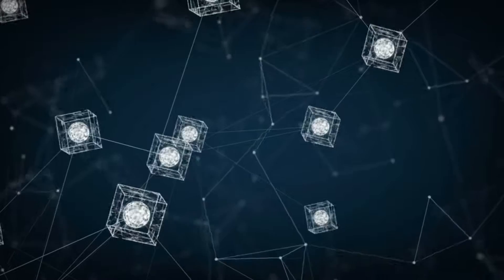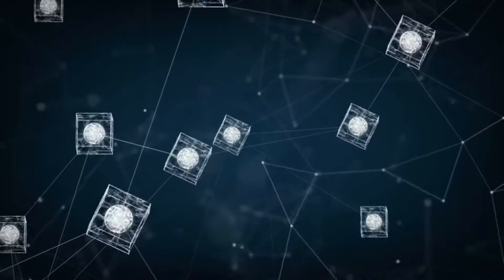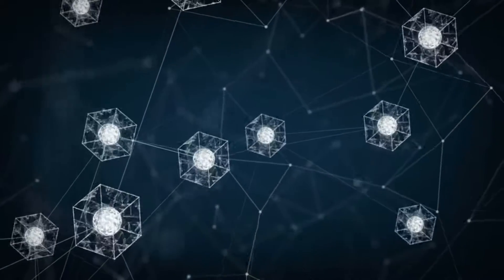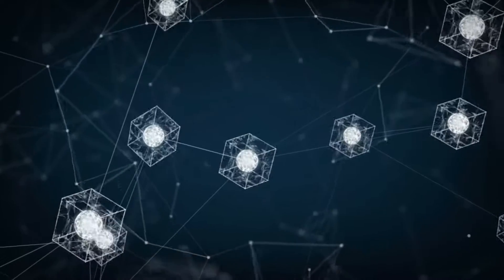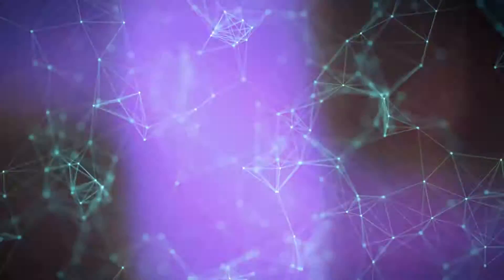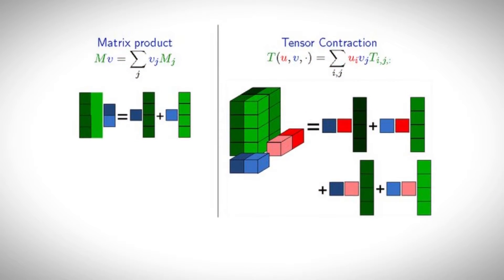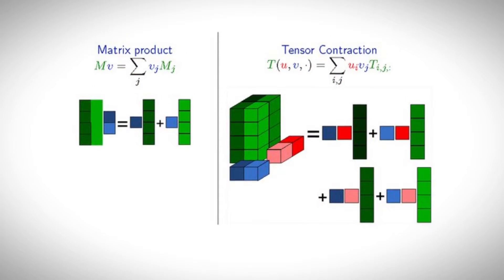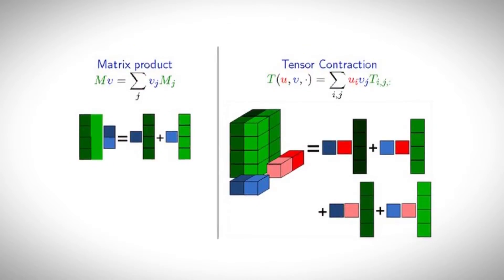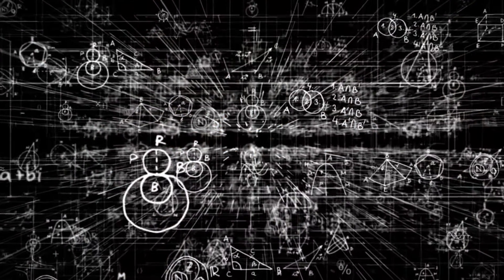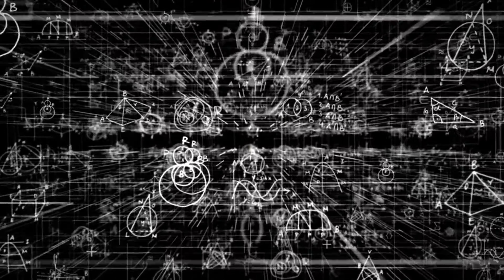A tensor network contraction is a way of manipulating a tensor network by combining two or more tensors into a single tensor. This is done by summing over the shared indices between the tensors, which reduces the dimensionality of the network. For example, contracting a matrix with a vector results in a scalar, and contracting a cube with a vector results in a matrix. It can be used to perform calculations that would otherwise require a large amount of memory and time on a conventional computer.